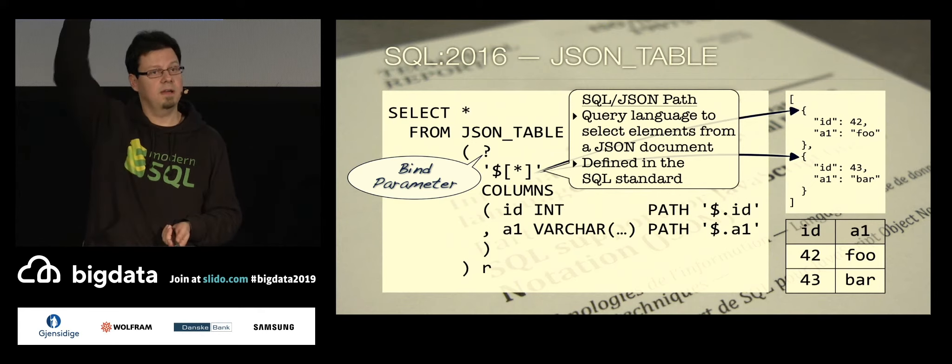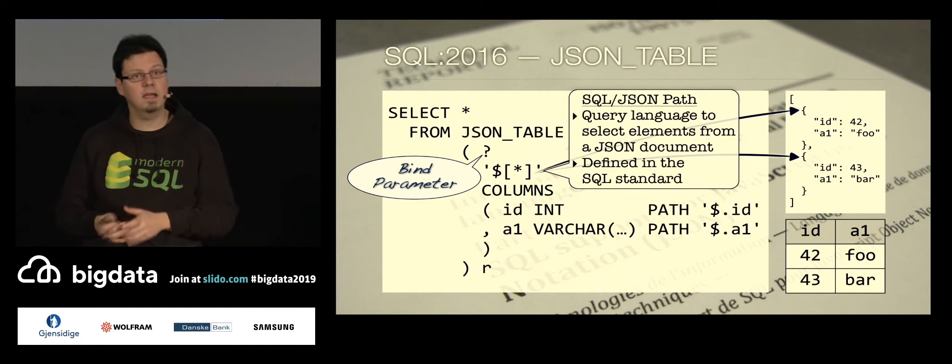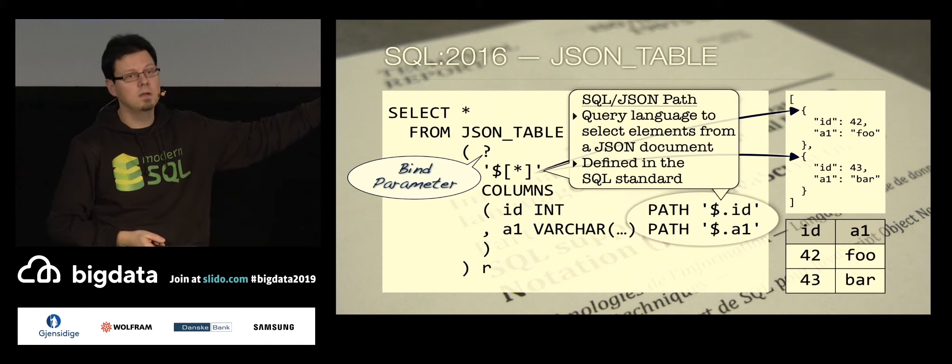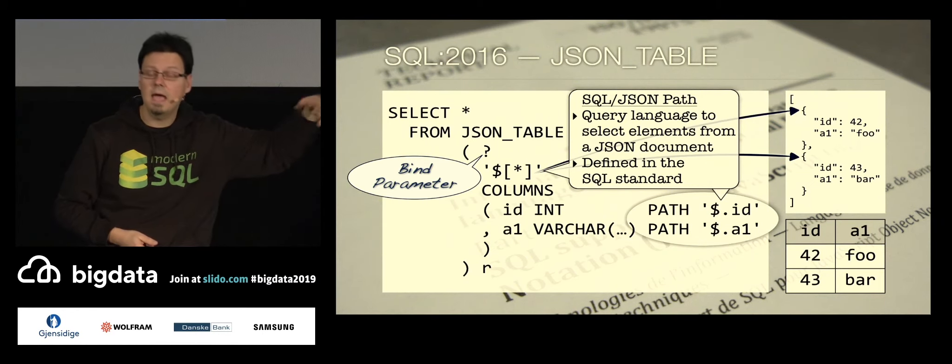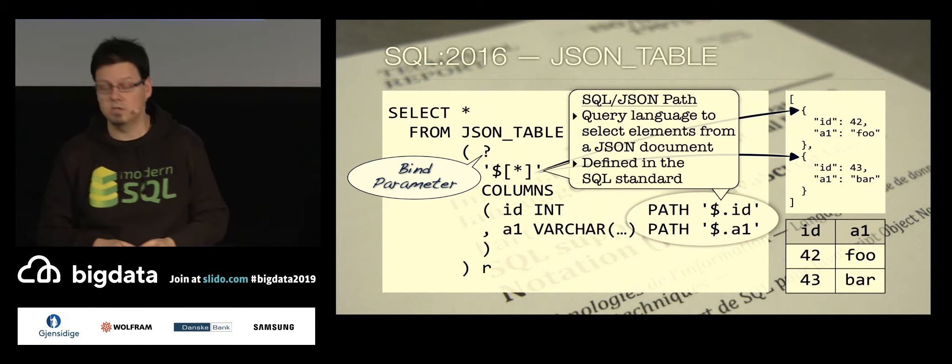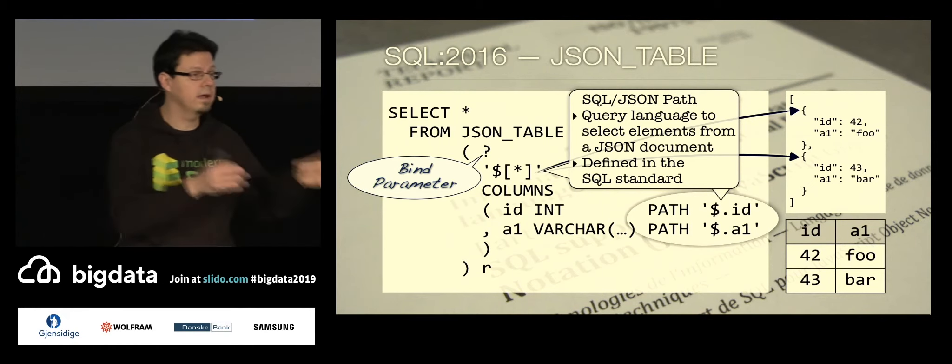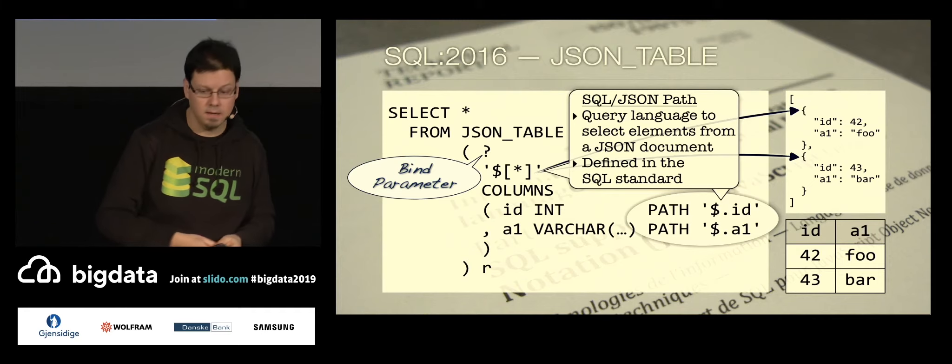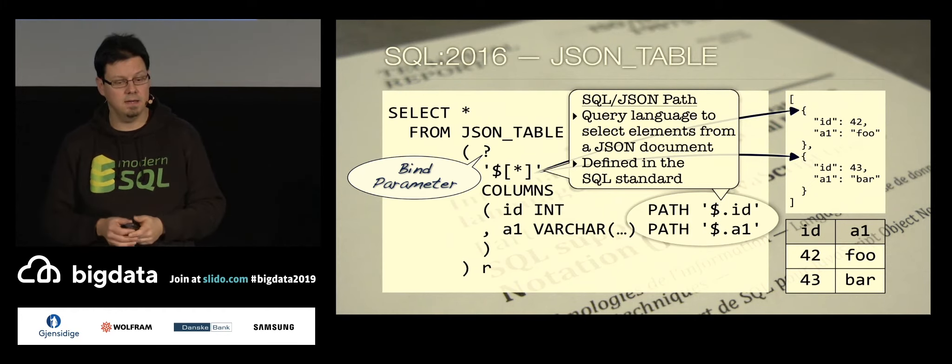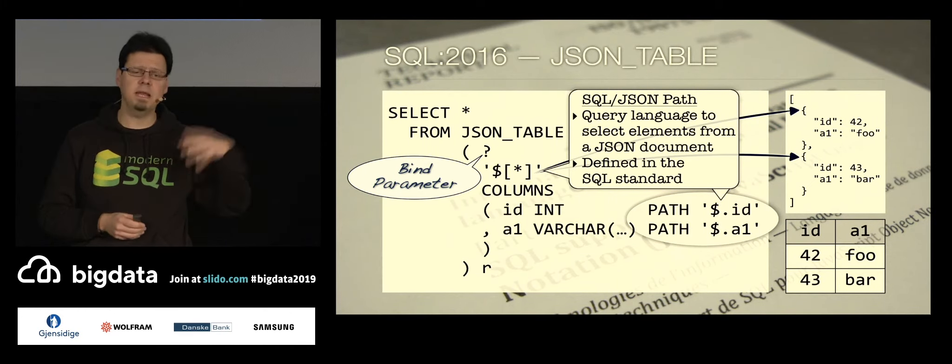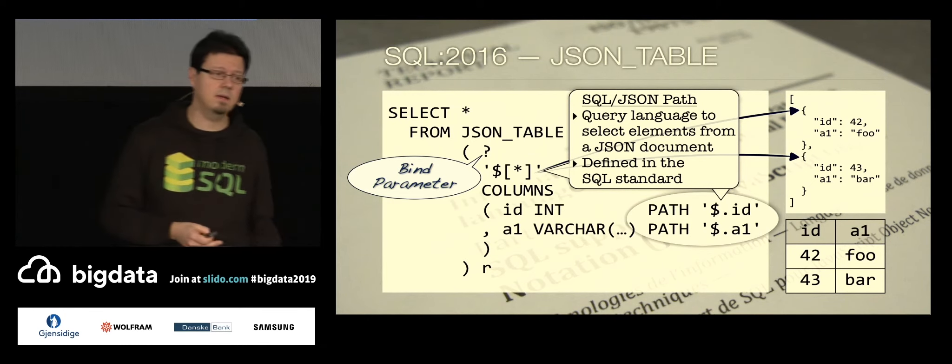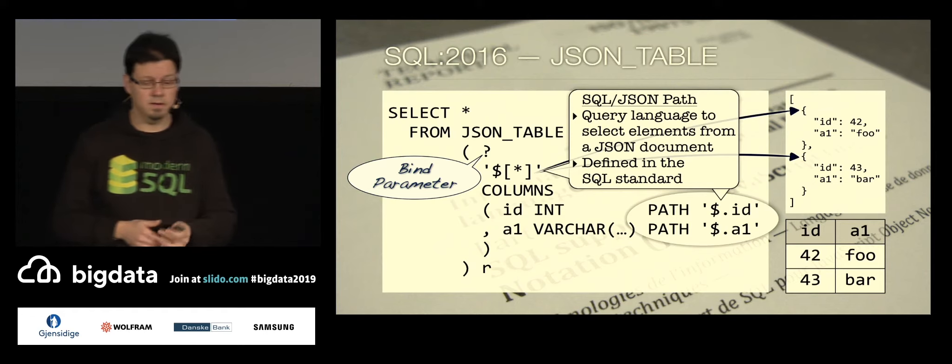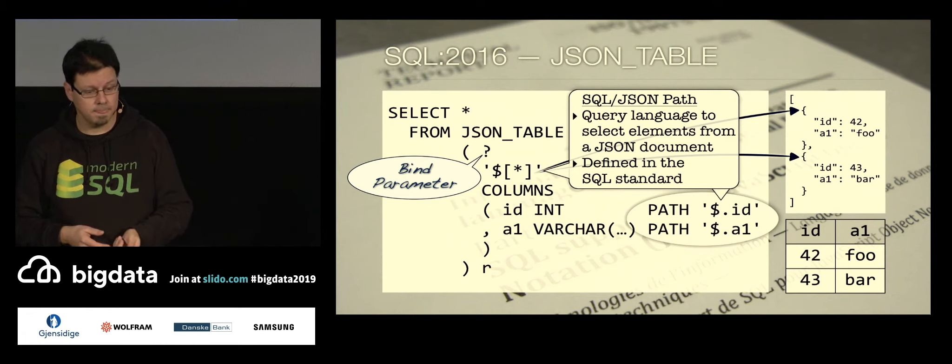And of course, we say names, types, like we know it from SQL. And again, we can use this path expression language to tell where to take the data from. Like here in the attributes ID and A1. And there are many more options there. Like you can set defaults and you can error handling and all of that. It's all there. It's just not on the slide. And that's it.